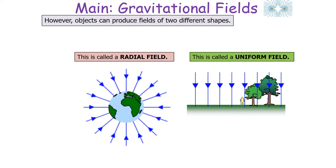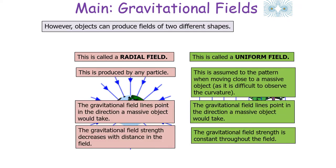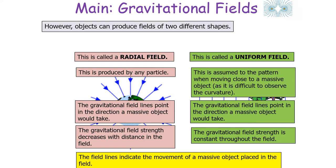Objects can produce fields of two different shapes: radial fields and uniform fields. A radial field is produced by any particle, while a uniform field is assumed when moving close to a massive object where the curvature of the radial field is not observable. In a radial field, field lines point towards the center of mass but gravitational field strength decreases with distance. In a uniform field, field lines point towards the object but gravitational field strength is constant throughout.